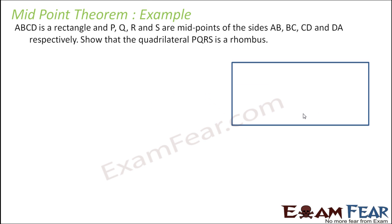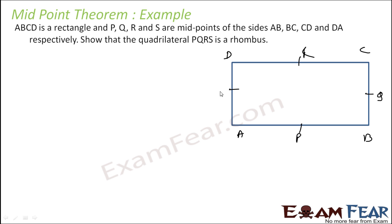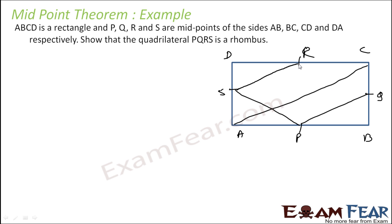The next question is: ABCD is a rectangle and PQRS are midpoints of the sides. We have to prove that quadrilateral PQRS is a rhombus. So we have P, Q, R, and S at the midpoints of these sides, and we have the diagonal drawn here.